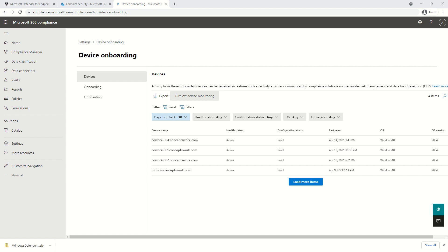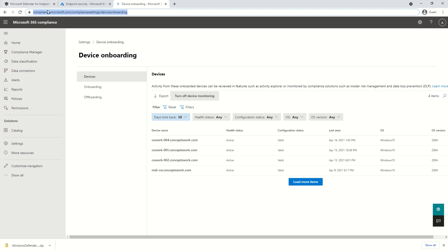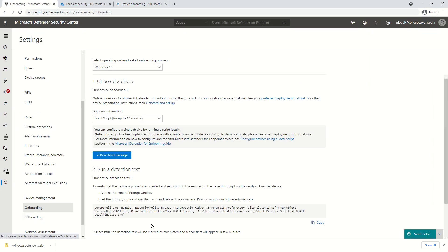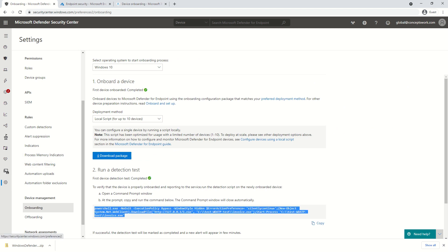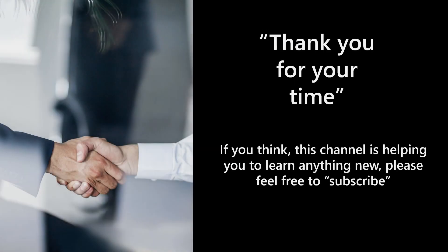So this was all about knowing how device onboarding works. To summarize: we discussed the onboarding process to Microsoft Defender for Endpoints with Windows 10 as the platform. We covered different deployment methods available — group policy object and Microsoft Endpoint Manager or MDM/Microsoft Intune. We discussed how to verify onboarding with the help of a detection test from the Settings tab under Onboarding. We also saw how to enable the connection between Microsoft Defender for Endpoints and your Endpoint Manager portal. In the next video, we are going to talk about how to onboard devices with the help of Group Policy Object. If you think this channel is helping you learn anything new, please feel free to subscribe and share this video with your technical community. Thank you so much.